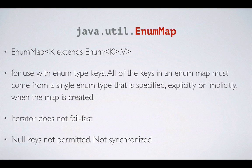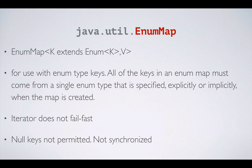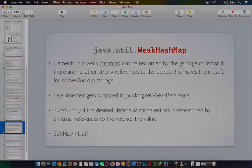EnumMap's iterator does not fail fast. What does that mean? If you have programmed in Java, you would have come across an error called ConcurrentModificationException. That essentially means that when you are trying to read from a list or map, some other thread or even the current thread itself is trying to modify that list or map. You should remember that ConcurrentModificationException has nothing to do with multiple threads — it can happen in a single thread also. Let's use some code to simulate a ConcurrentModificationException.